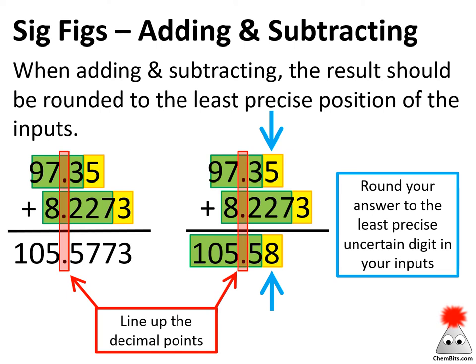When we're adding and subtracting, the result should be rounded to the least precise position of the inputs. A little easier to see than to describe: just like you always do, line up those decimal points and then round to whatever position is least precise — the shortest decimal that we're rounding to. So in this case, 97.35 — the uncertainty is starting to show up in that second decimal place. So even though it looks like I've got information all the way down to the fourth decimal place in this number, my answer has to be rounded to the second decimal place.